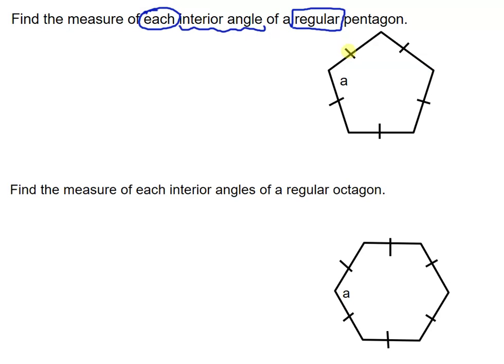So I included a diagram here. We know regular means that all the sides are going to be the same, and that must mean all of the angles are also going to be the same.